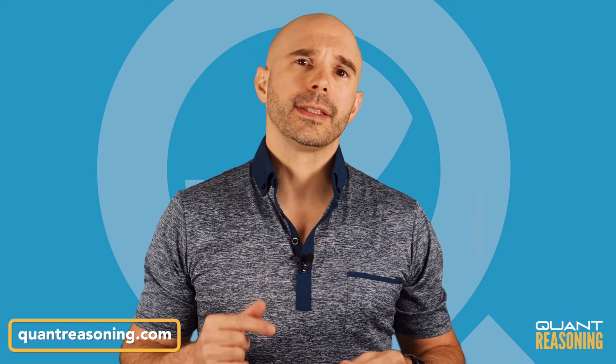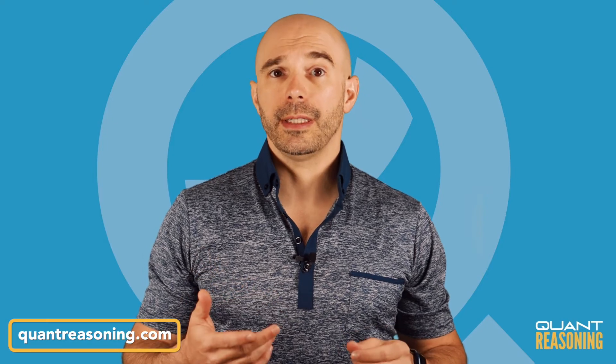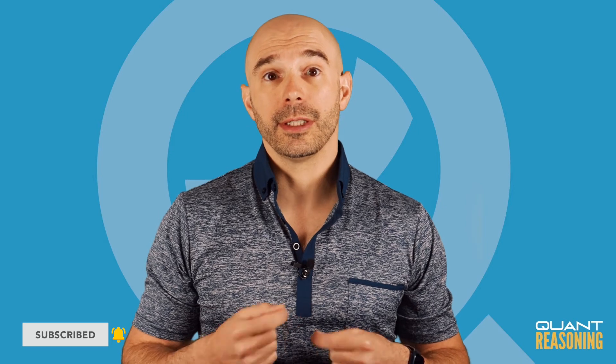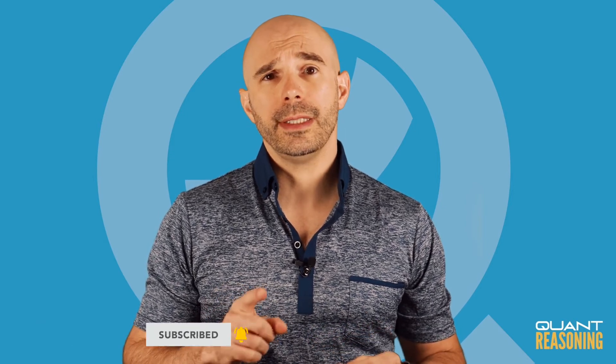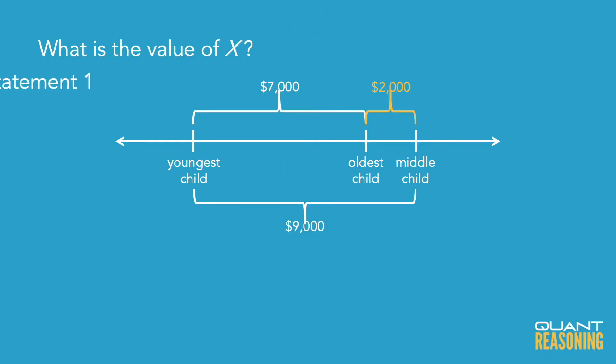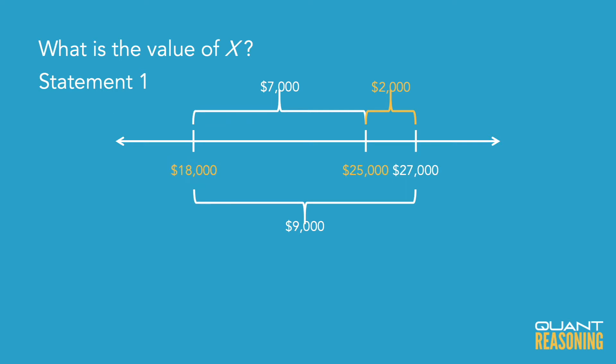As I look at these statements, it seems to me that each of these statements on its own enables us to orient ourselves on the number line — we can tell exactly where we are. It's probably easier to see that from statement one, since it pinpoints the middle child at exactly 27,000, so then we can figure out what the other two inherited and calculate the sum.